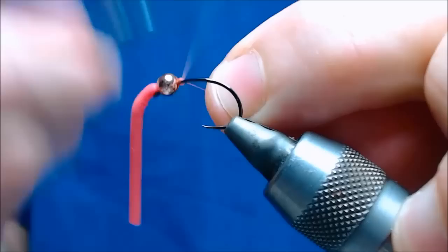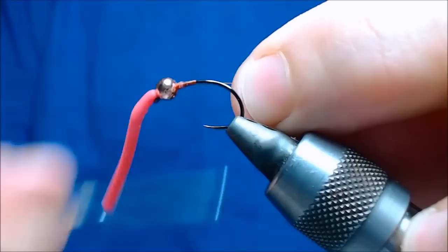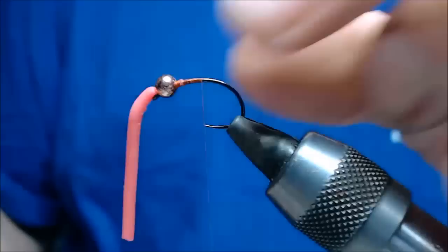So then put the thread back onto the hook shank. Keep going. So basically the bead has pushed the material forward.